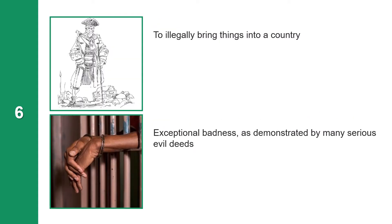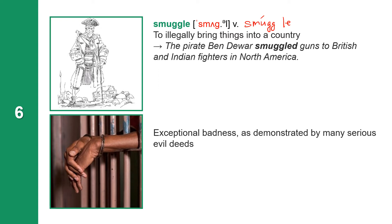The next word means to illegally bring things into a country. The word is Smuggle. Smuggle is a verb. It has two syllables: S-M-U-G-G-L-E, with stress on the first syllable. Smuggle means to illegally bring things into a country. The pirate smuggled guns to British and Indian fighters in North America.